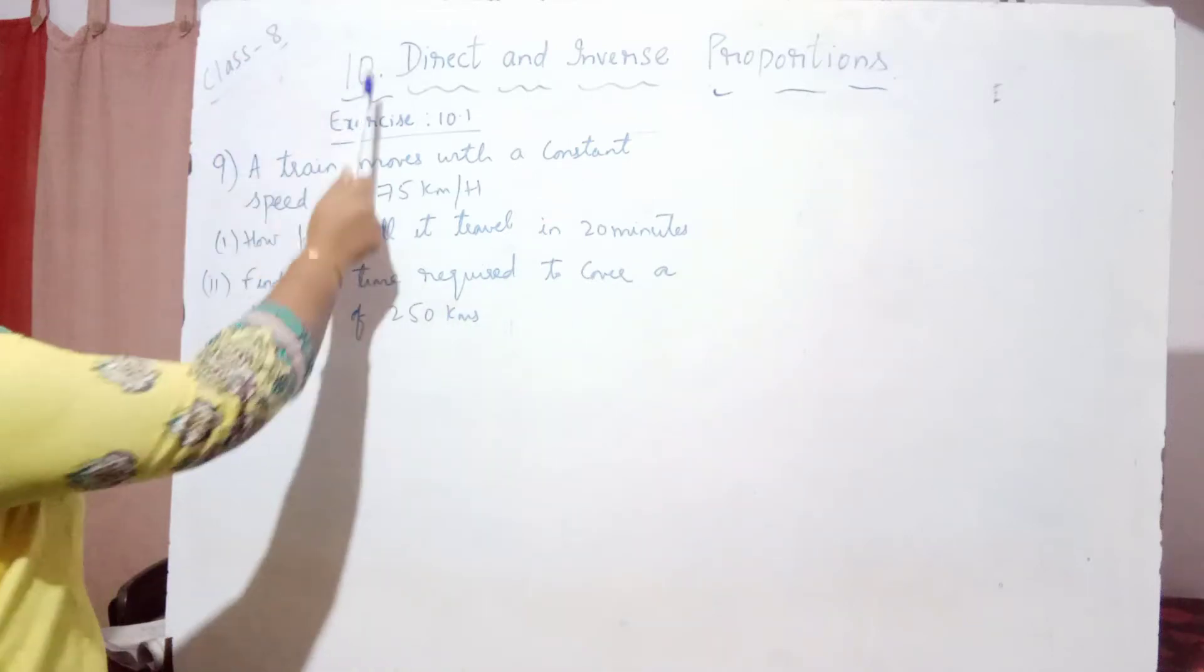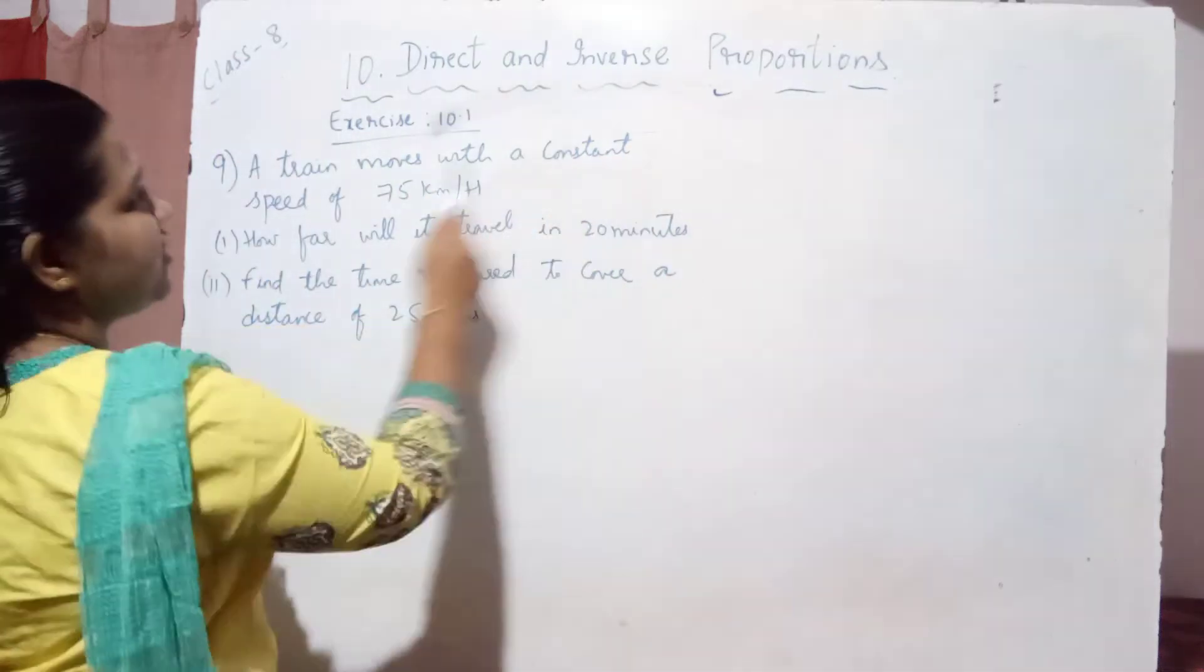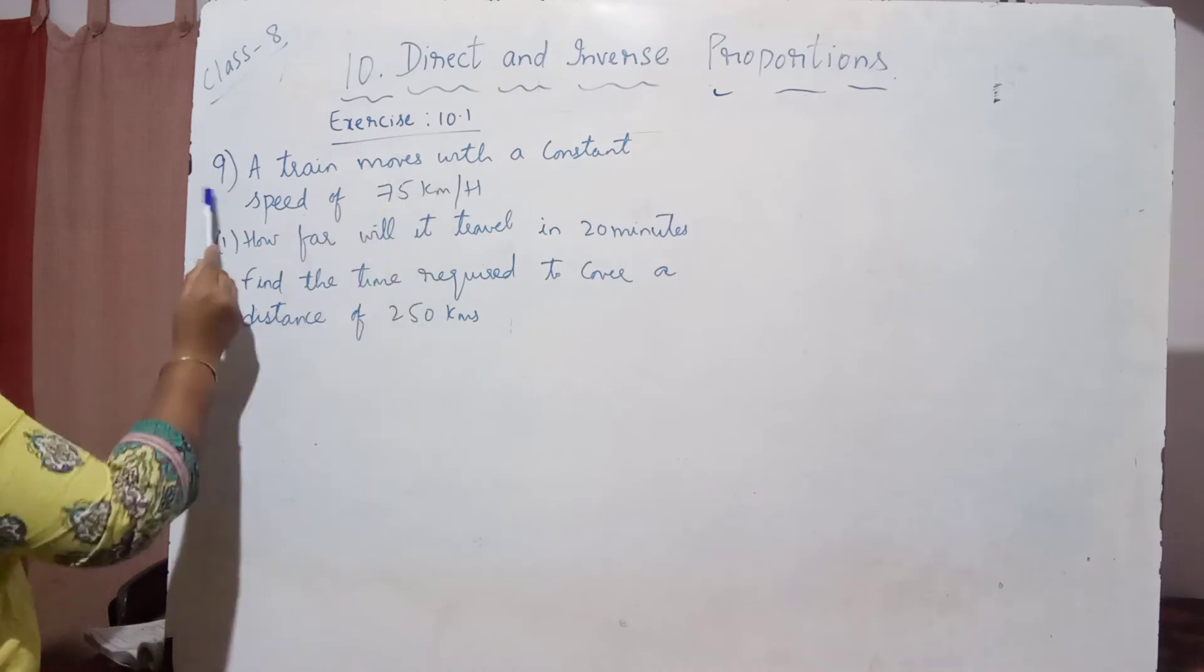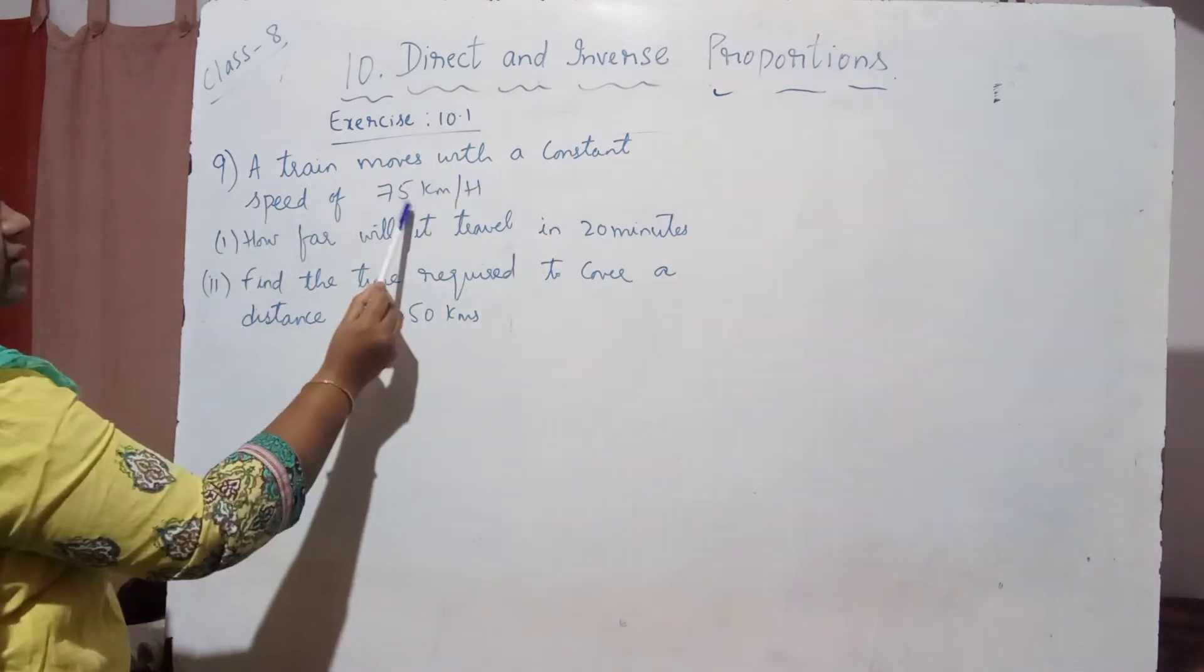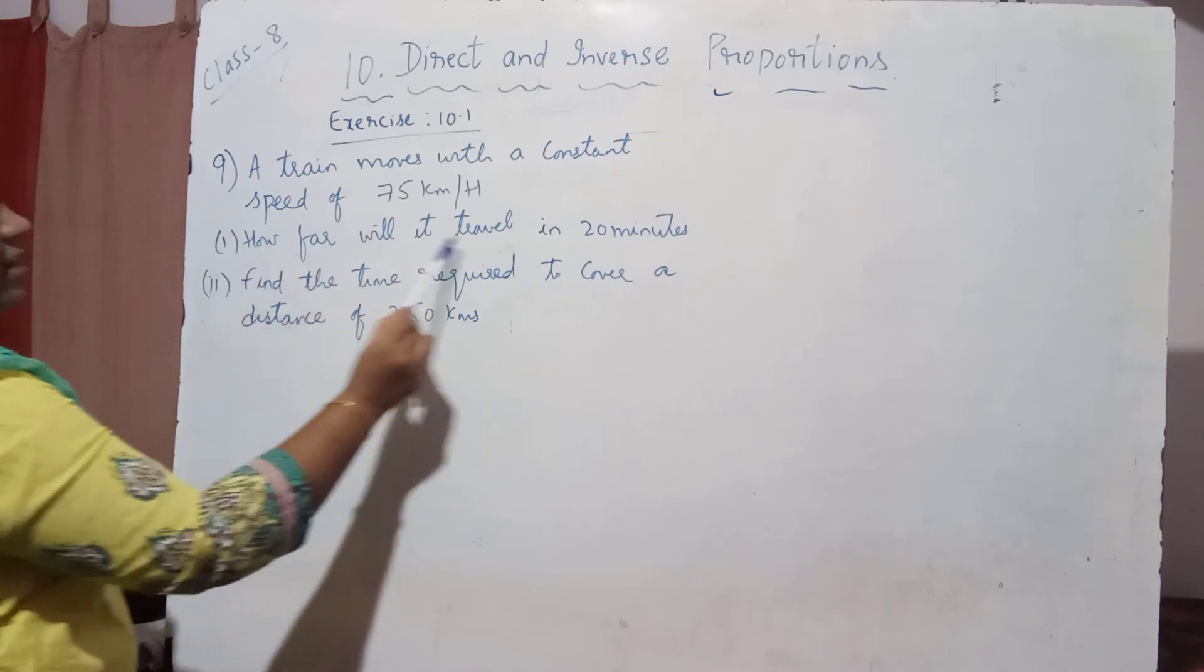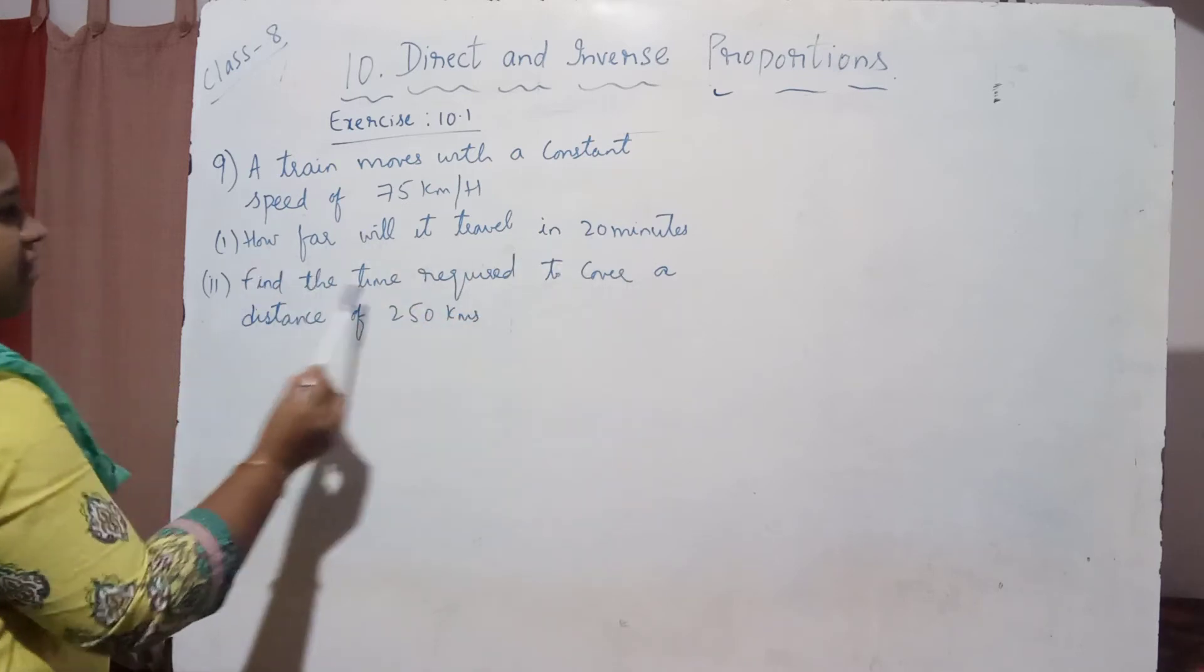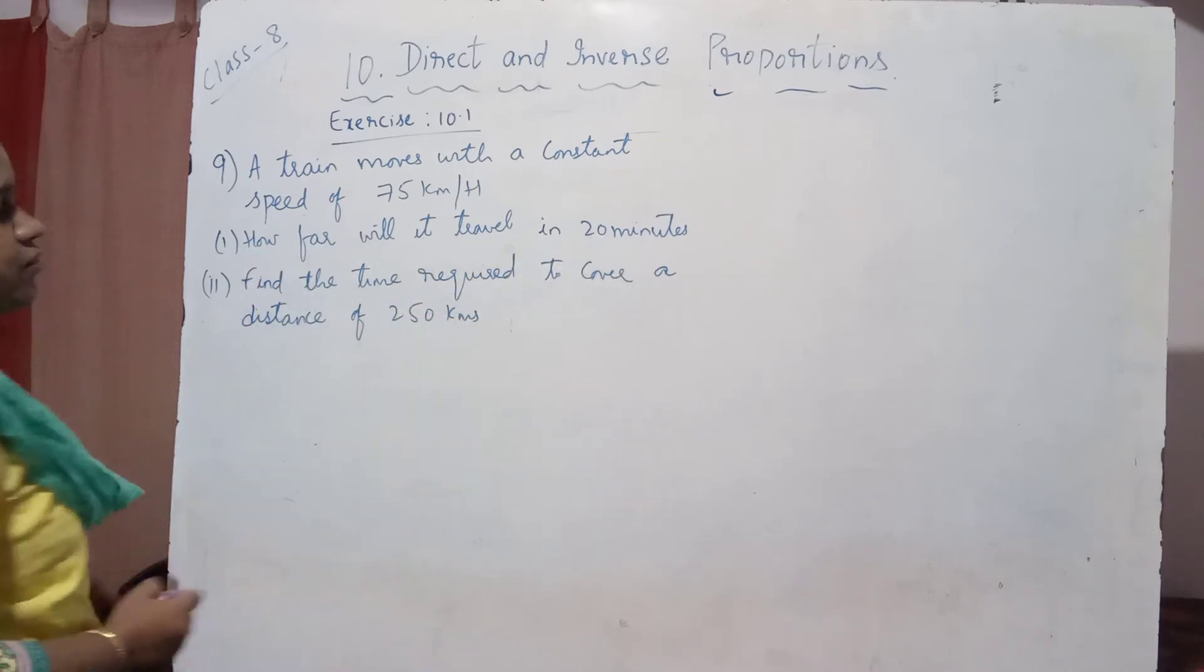Today in 8th class mathematics, Chapter 10 on Direct and Inverse Proportions, Exercise 10.1, this is the 9th question. A train moves with a constant speed of 75 km per hour. How far will it travel in 20 minutes? Find the time required to cover a distance of 250 km.